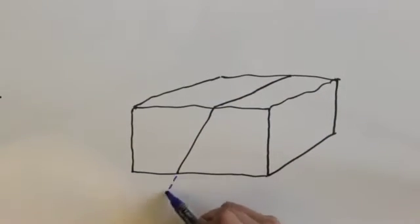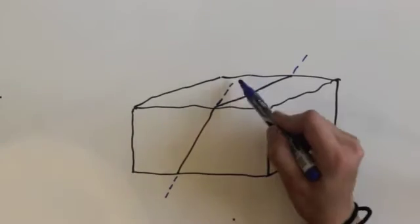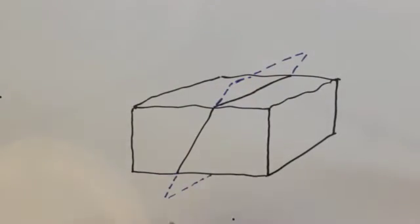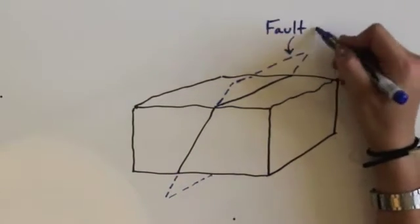We'll start with the fault plane, the plane along which movement occurs. It's important to remember that it is a plane, not just a line.